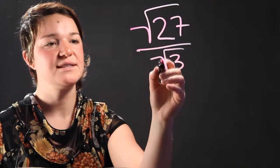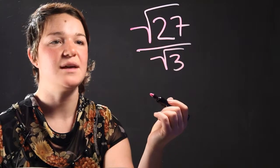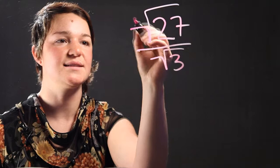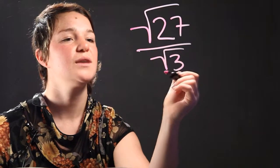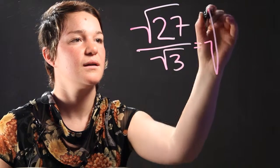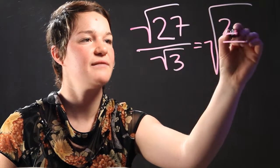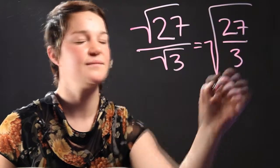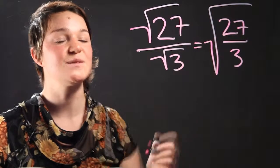So when a radical is divided by another radical with the same indice, here the indice is 2 and 2, we can simplify this expression to be 27 divided by 3, all within the same square root symbol.